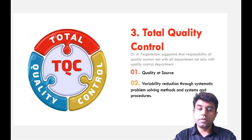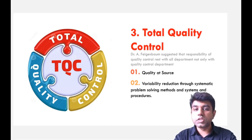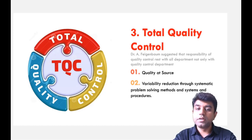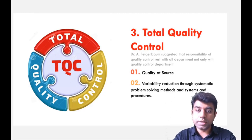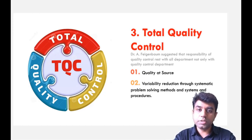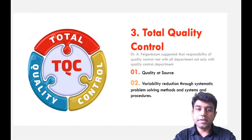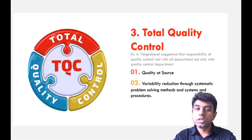The second tool for quality improvement is Total Quality Control (TQC). This principle, given by Feigenbaum, suggests that the responsibility of quality control rests with all departments, not only the quality control department. All people working under the roof of the industry must focus on quality. He stated that quality always starts from the source, and variability reduction through systematic problem-solving methods and systems can definitely improve quality.